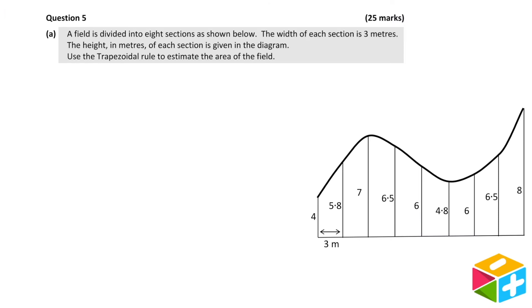A field is divided into 8 sections as shown below. The width of each section is 3 meters. The height in meters of each section is given in the diagram. Use the trapezoidal rule to estimate the area of the field.